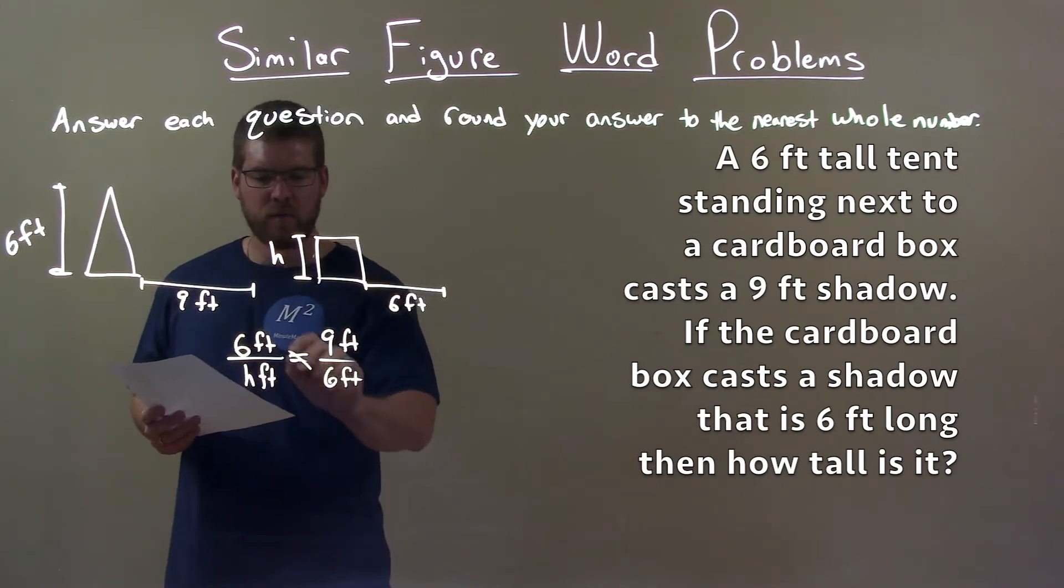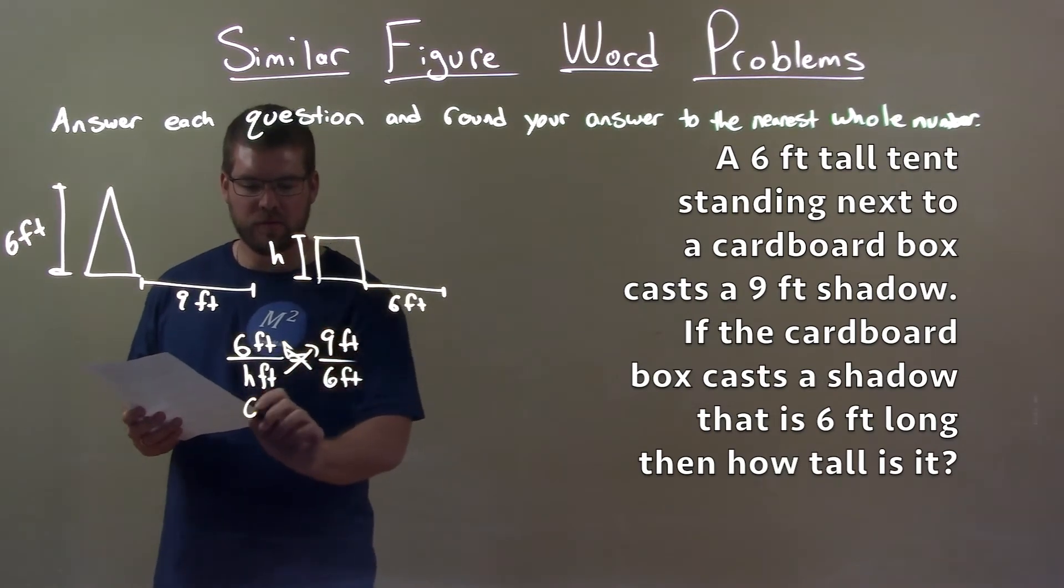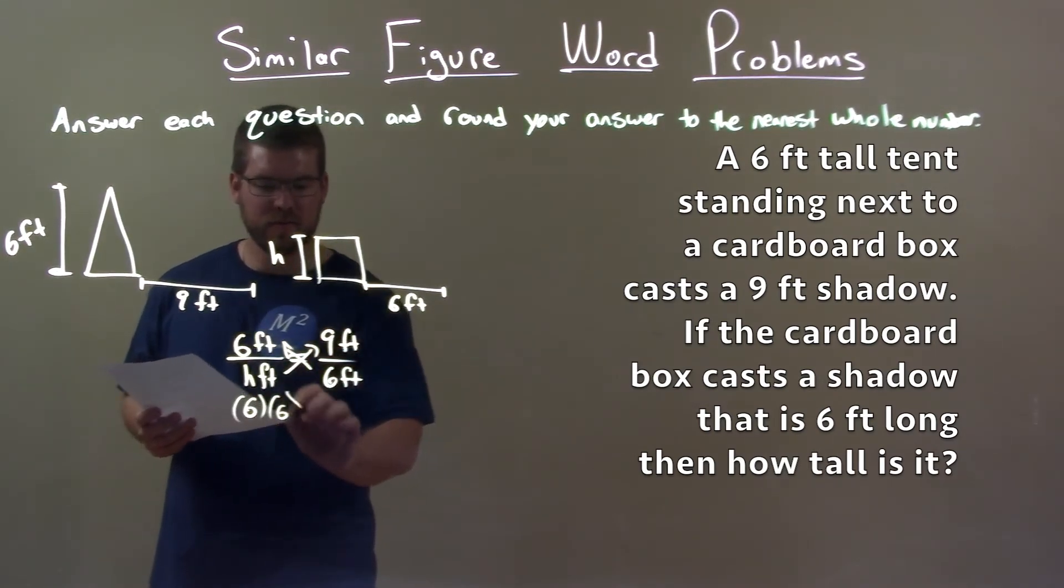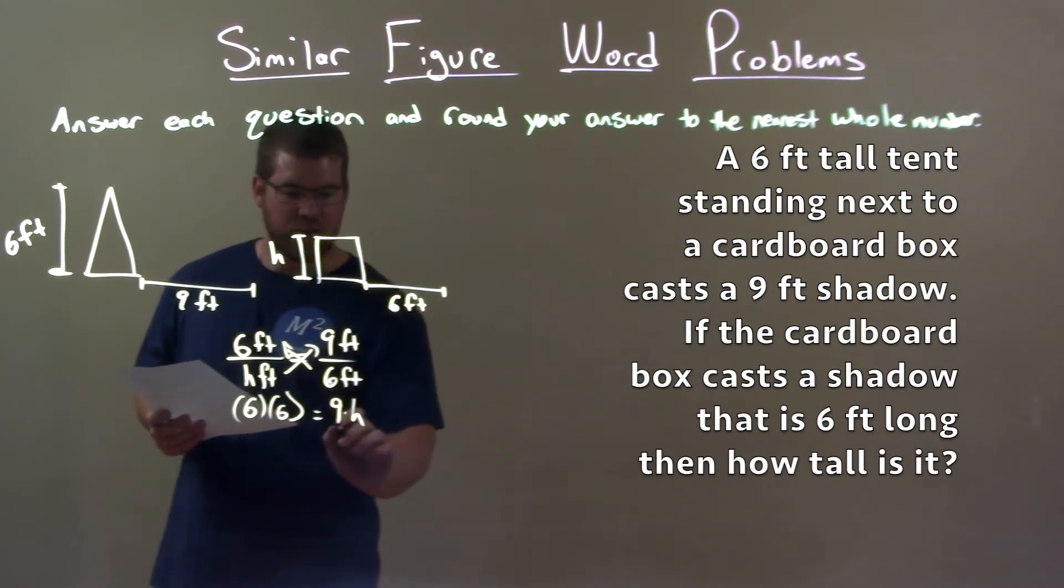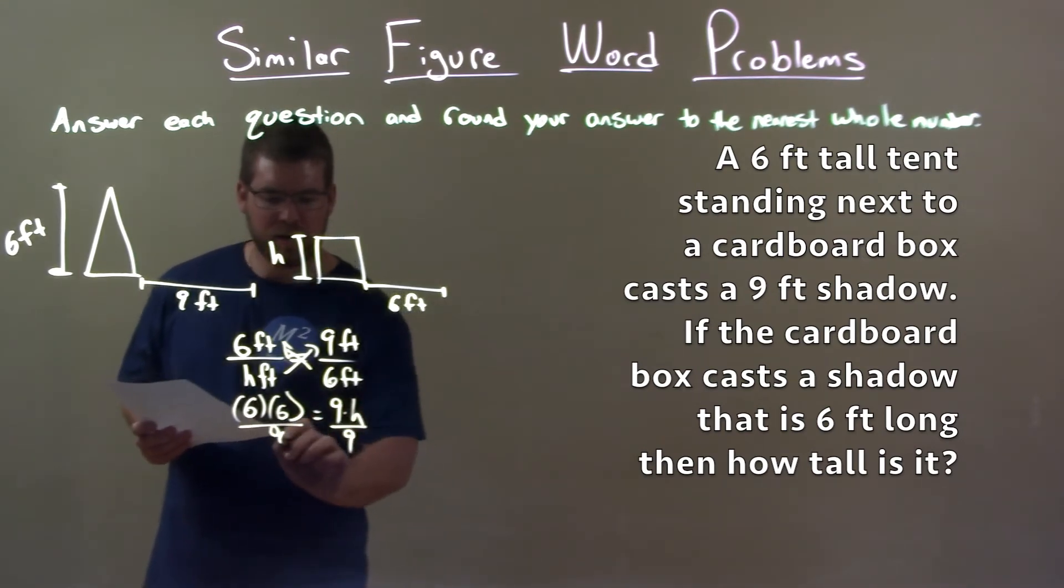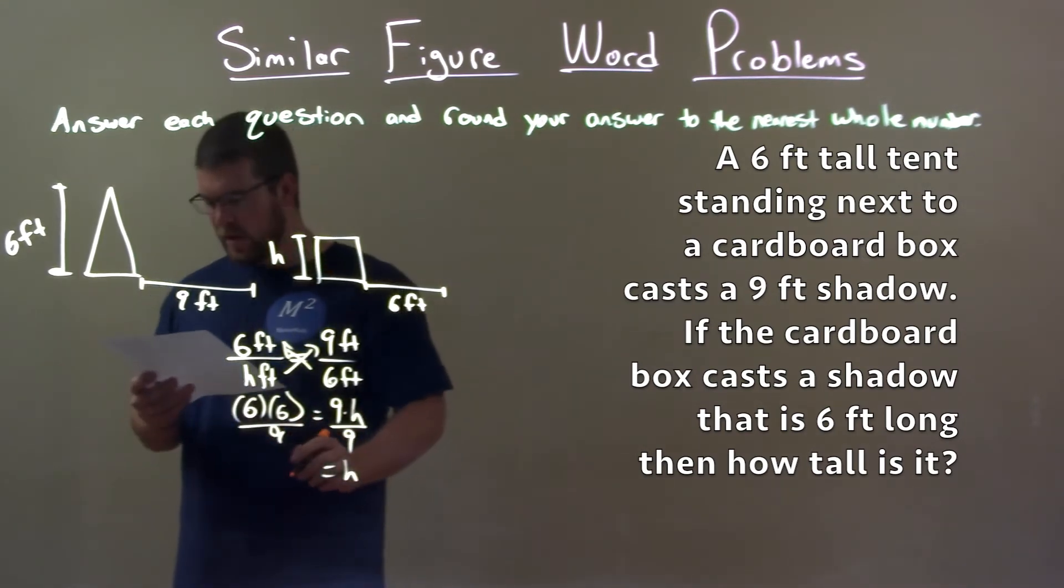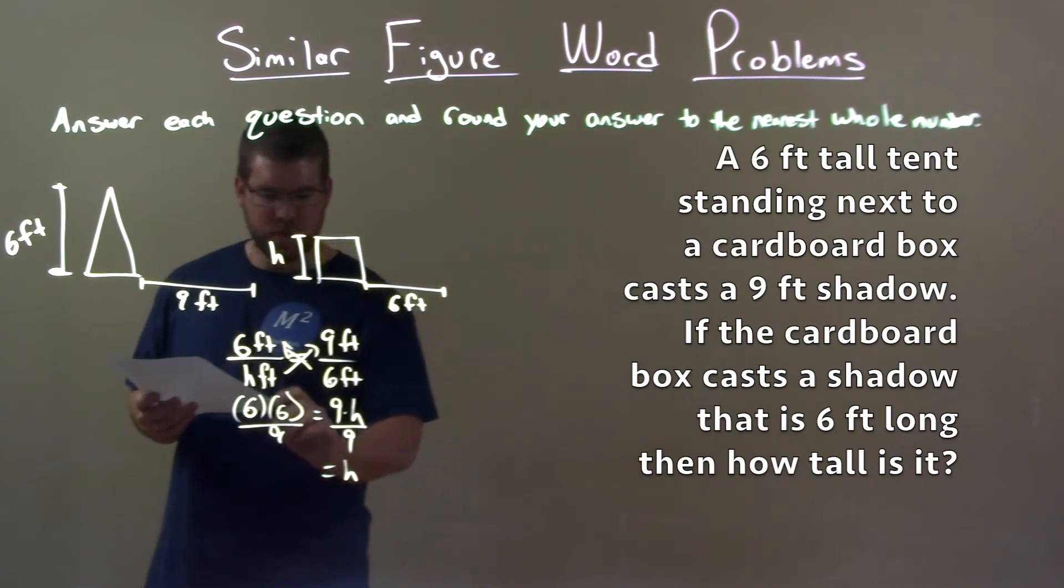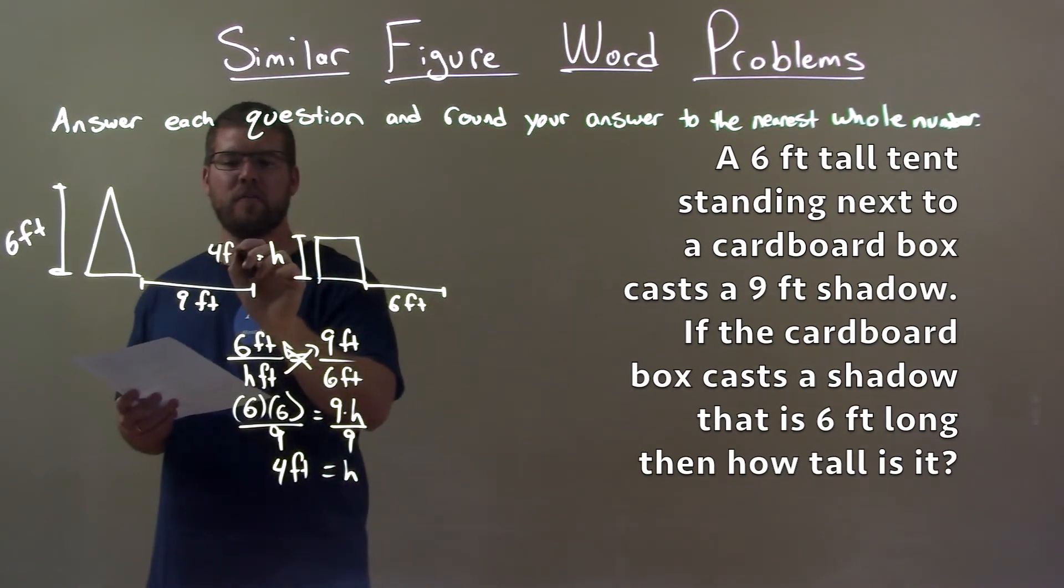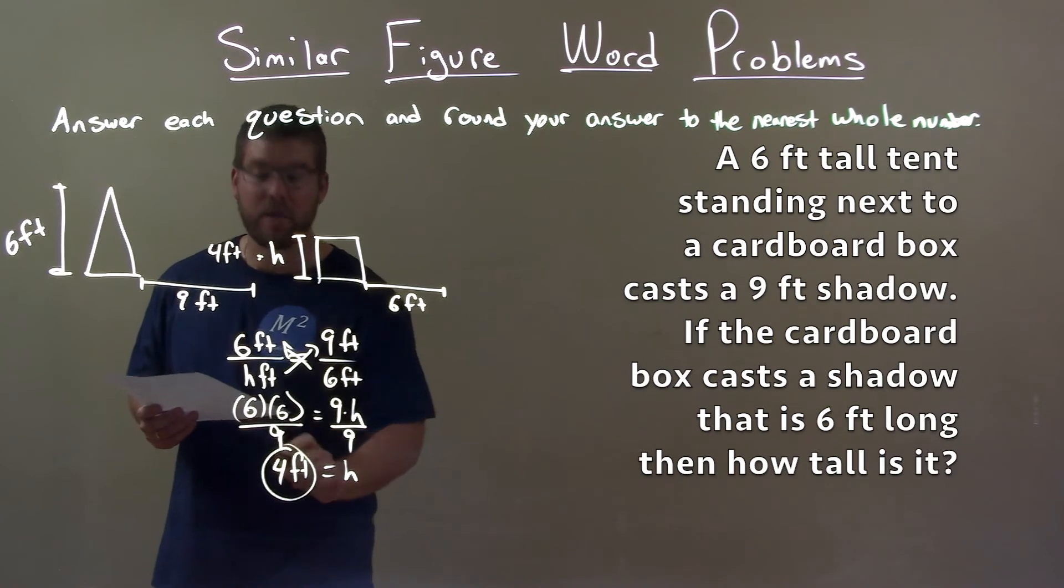So to solve that, we cross multiply. We're left with six times six equals nine times h. And then divide both sides by nine to get h by itself. So that h value we found to be six times six divided by nine is four feet. So our height here is just four feet for that box.